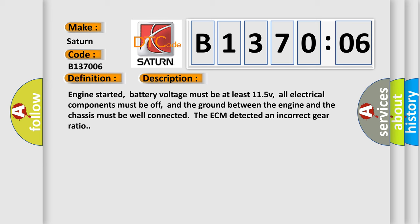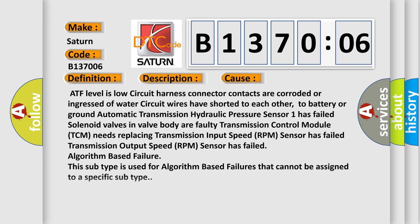This diagnostic error occurs most often in these cases: ATF level is low, circuit harness connector contacts are corroded or ingressed of water, circuit wires have shorted to each other, to battery or ground, automatic transmission hydraulic pressure sensor has failed, solenoid valves in valve body, a faulty transmission control module TCM needs replacing, transmission input speed RPM sensor has failed, transmission output speed RPM sensor has failed, or algorithm based failure. This subtype is used for algorithm based failures that cannot be assigned to a specific subtype.